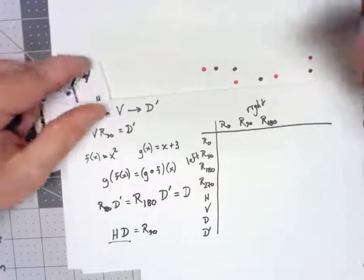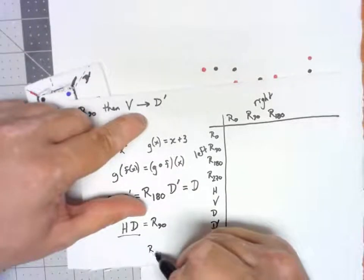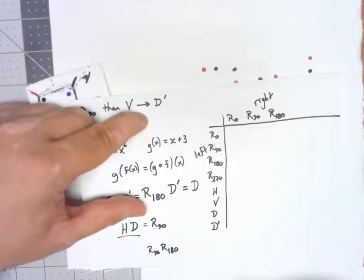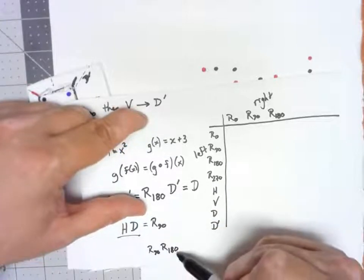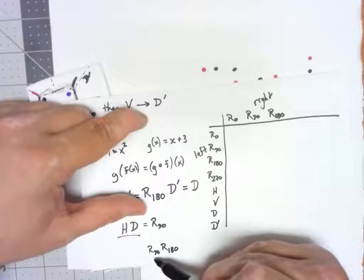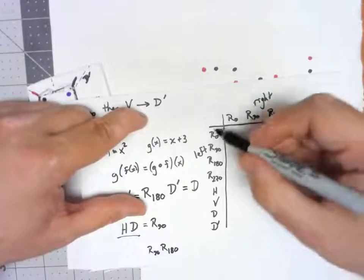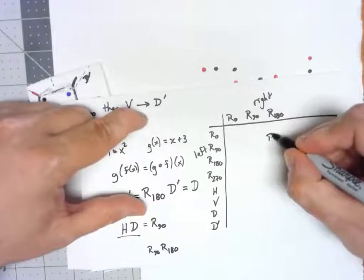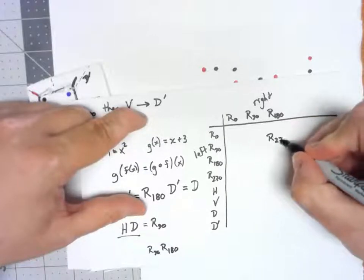So, if I wanted to do a rotation by 90, rotation by 180, the rotation by 180 happens first, the rotation by 90 happens next. 90, 180, that's going to end up being a rotation by 270.